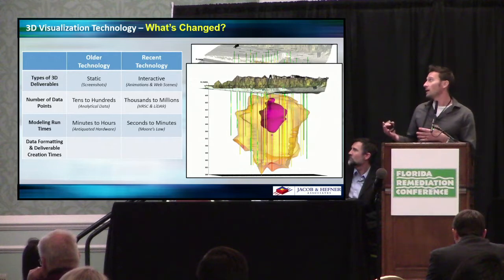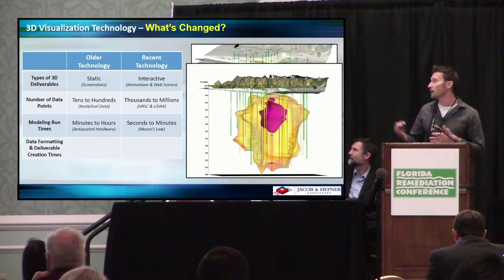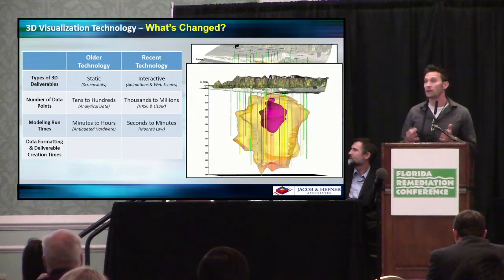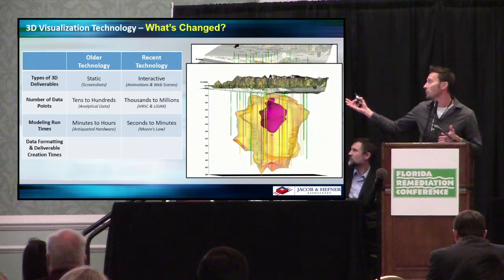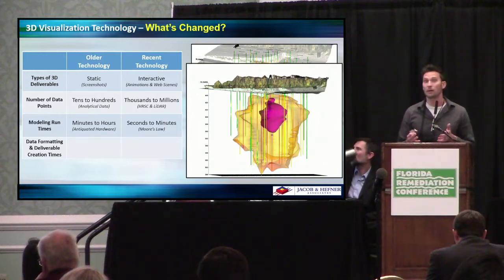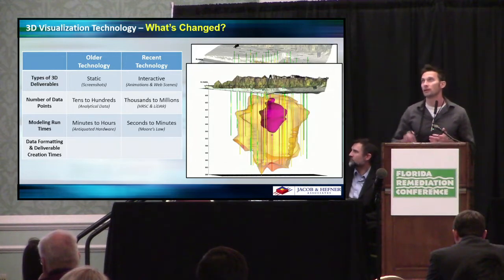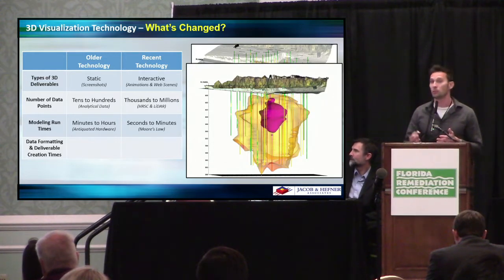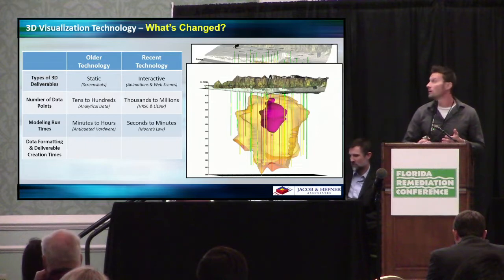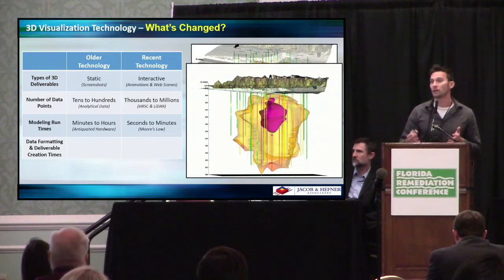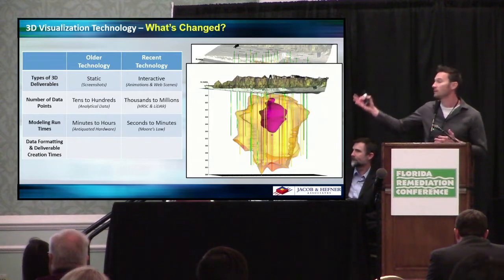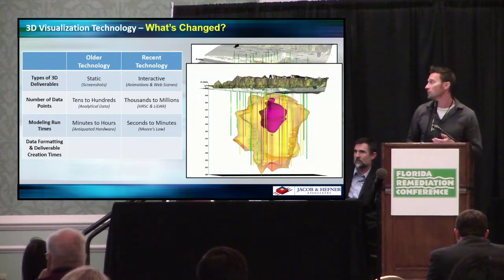Thirdly, because you have a lot of data, the modeling runtimes are important. Ten years ago, the hardware was antiquated — it might take you minutes or even hours to run and create a 3D model. But now it might only take seconds. This is due to Moore's Law, which states that the number of transistors on a microchip approximately doubles every two years while the cost is halved — essentially meaning that technology growth is exponential. So the time it takes to create these things is really getting drastically reduced.